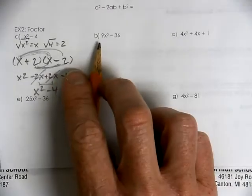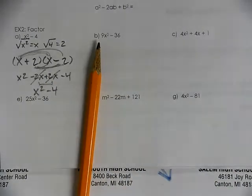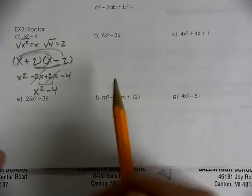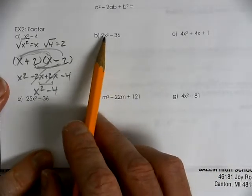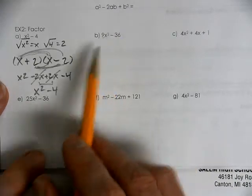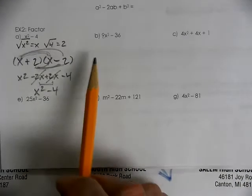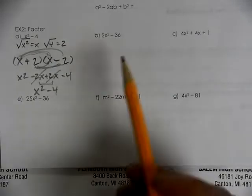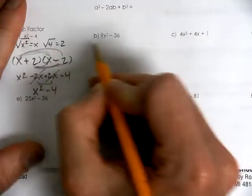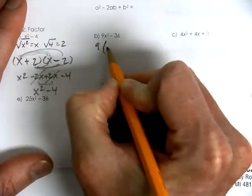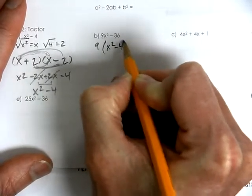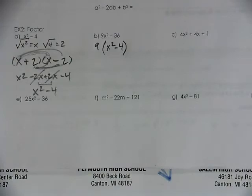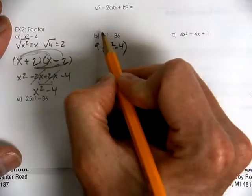For letter B, we have a tricky situation. We have 9X squared and 36. When possible, you do always want to try to identify is there a number that can come out? So, I notice I have a 9 and a 36. So, I'm looking for a GCF, a greatest common factor, that can be pulled out of that. So, I notice that 9 goes into 9 and 9 goes into 36 four times. So, I can factor that 9 out.